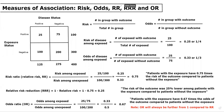Hi everyone, and welcome to the first lecture on measures of association. In this lecture, I'm going to focus on risk versus odds and also touch on some of the relative measures of association. And then in the second lecture to come, we will talk about more absolute measures of association, such as attributable risk and absolute risk reduction.